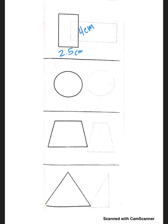Area equals base times height. Every single problem involving area I want you to write the formula down, especially for this unit. We'll write area equals base times height, then fill in the numbers: area equals 4 times 2.5. Mental math — if you think about 4 quarters that's a dollar, but instead of a quarter this is 2.5, so 4 times 2.5 is 10. Area equals 10 centimeters.